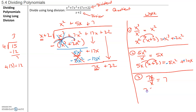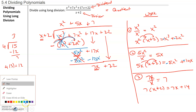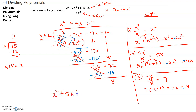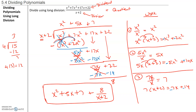We take the 7 and multiply by x plus 2, which gives you 7x plus 14. Since I know I have to subtract it, I make this a negative 7x and a negative 14. So 7x minus 7x is 0, and 22 minus 14 is 8. So my answer is x squared plus 5x plus 7, and the remainder is 8, which we write as 8 over x plus 2. I'll be happy to answer questions during class and we'll do more practice.